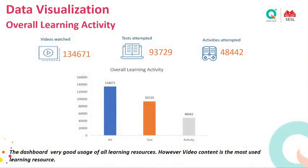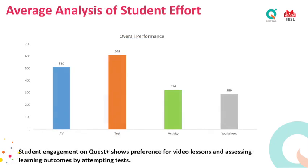Looking at overall usage data: 1,34,671 videos were watched, 93,729 tests were attempted, and 48,442 activities were completed by students. On average, a student has viewed about 510 videos, attempted 609 tests, done 324 activities, and 289 worksheets. There are students who have done much more, and they have come back saying they see the benefits of using the app just before their exams, and it shows in their scores.